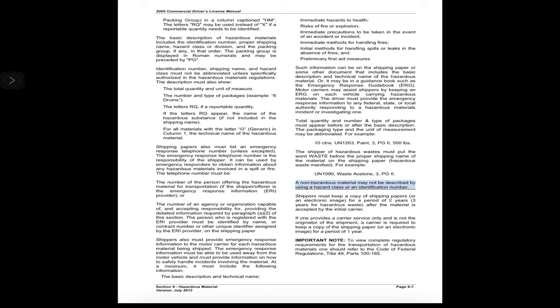Portable tanks must also show the lessee or owner's name and display the shipping name of the contents on two opposing sides. The letters of the shipping name must be at least two inches tall on portable tanks with capacities of more than 1,000 gallons, and one inch tall on tanks with capacities of less than 1,000 gallons. The identification number must appear on each side and each end of a portable tank or other bulk packaging that holds 1,000 gallons or more, and on two opposing sides if less than 1,000 gallons.